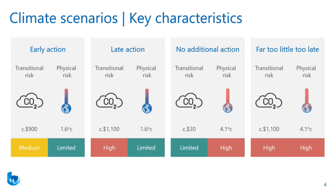Under a late action scenario, net zero is still reached by 2050 and so physical risk and warming is largely still limited by the end of the century. However, this is achieved in a much more disorderly way — the action to implement the carbon tax isn't taken immediately but is instead delayed, resulting in a disorderly transition where a higher carbon tax is then required to reach net zero within the shorter time frame.